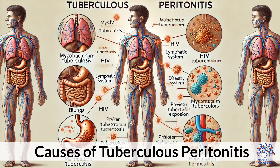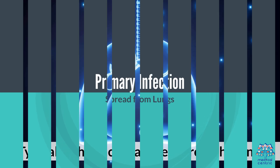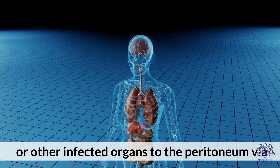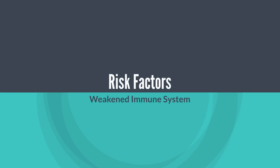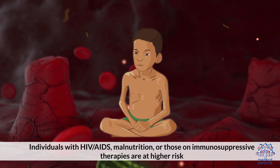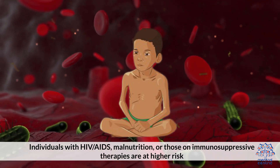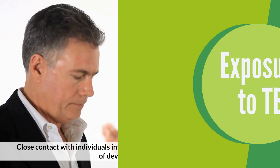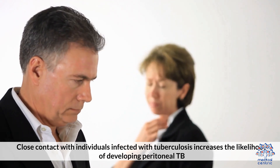Causes of Tuberculosis Peritonitis: The bacteria typically spread from the lungs or other infected organs to the peritoneum via the bloodstream or lymphatic system. Risk factors include a weakened immune system — individuals with HIV, AIDS, malnutrition, or those on immunosuppressive therapies are at higher risk. Close contact with individuals infected with tuberculosis also increases the likelihood of developing peritoneal TB.